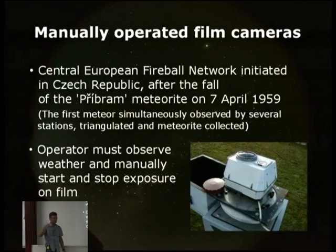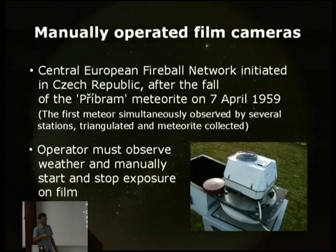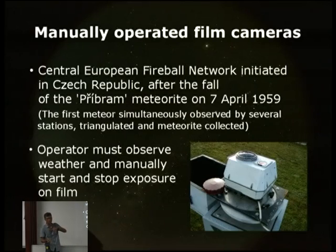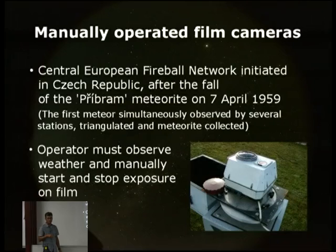These manual cameras were run in times when human labor was not as expensive as today. The operator had to replace the film manually — there's a tray, a cover, and a box to protect the camera from rain. The cameras were run mostly at meteorological stations where observers had to report the weather every hour, so they did this on top of their normal work.